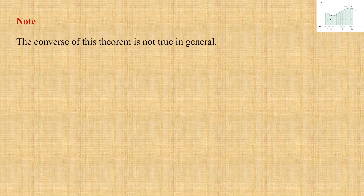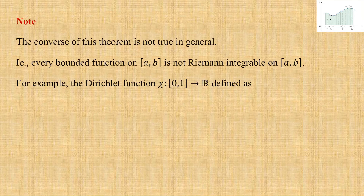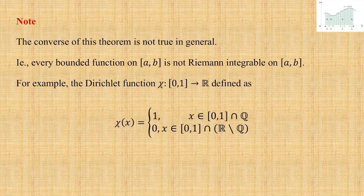The converse of this theorem is not true in general. A counter-example: every bounded function on [a,b] is not necessarily Riemann integrable on [a,b]. For example, the Dirichlet function χ from the closed interval [0,1] to ℝ is defined as χ(x) = 1 for every rational number in [0,1] and χ(x) = 0 for every irrational number in [0,1]. This function takes only two values, 0 and 1, so it is a bounded function, but it is not Riemann integrable.